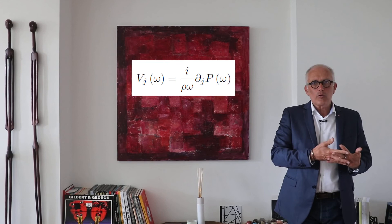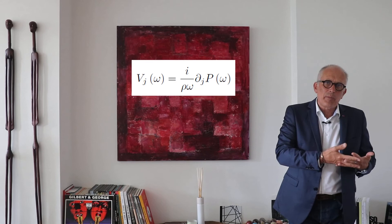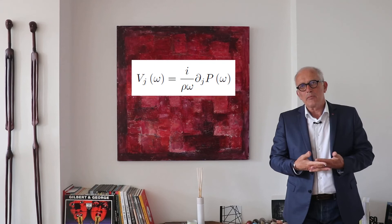In vector terms, you would say that the velocity vector or the velocity spectrum vector is equal to i divided by rho omega times the gradient of the pressure field.